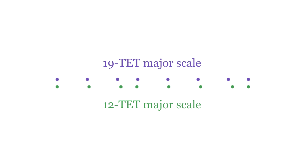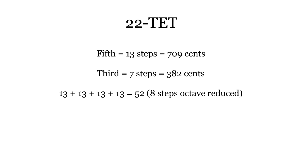The effect the tuning of the fifth has in nineteen tet is pretty subtle. In some other tunings, the difference is more pronounced. Take a look at twenty-two tet. Twenty-two tet has a good fifth and a good major third, but since the fifth is somewhat sharp, four fifths stack to a supermajor third, not a major third.